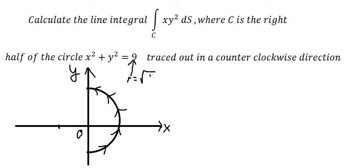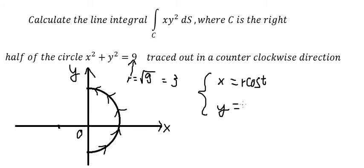Because this is counterclockwise, and the radius of the circle is r equals the square root of 9, which is 3. So in this situation I will use x equals r·cos(t), y equals r·sin(t), and since r equals 3 we put 3 in for both.